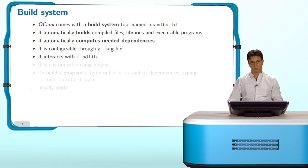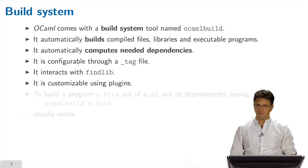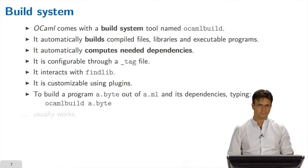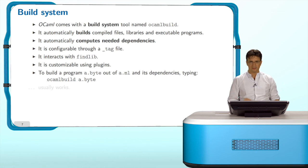To do so, it interacts with FindLib. And if there are some aspects that are very specific to your project, it is also customizable using plugins that are written in OCaml. But most of the time when you have a simple program, like just a bunch of ML files and a module that corresponds to what your program should do, then just by typing ocamlbuild a.byte, it will compile a.ml with all its dependencies and produce an executable program.